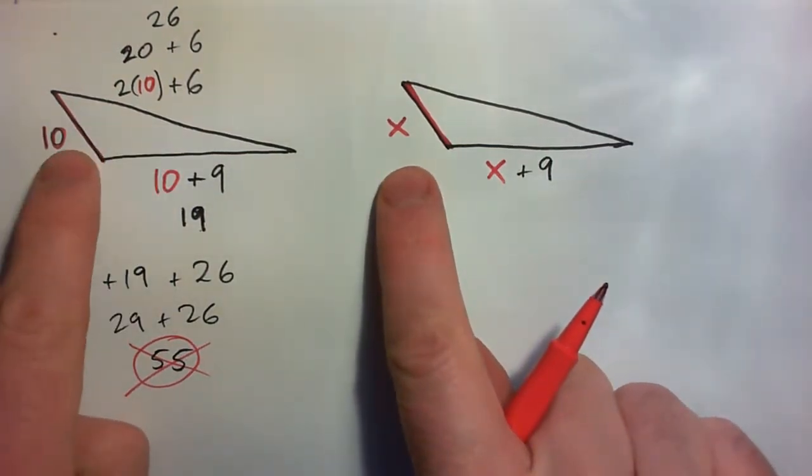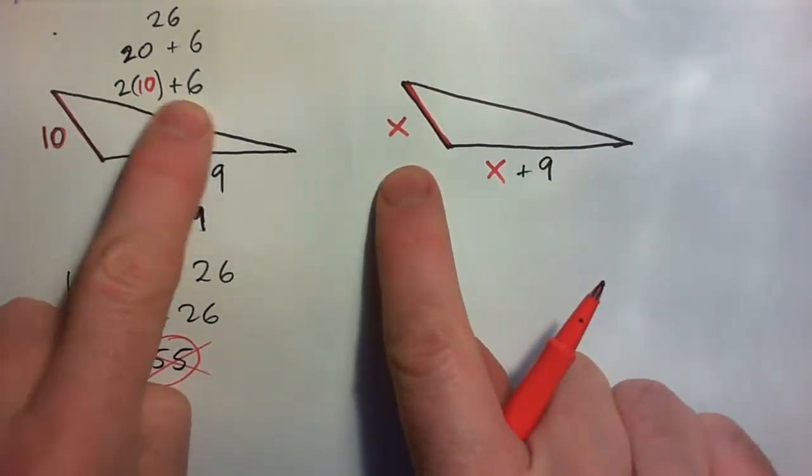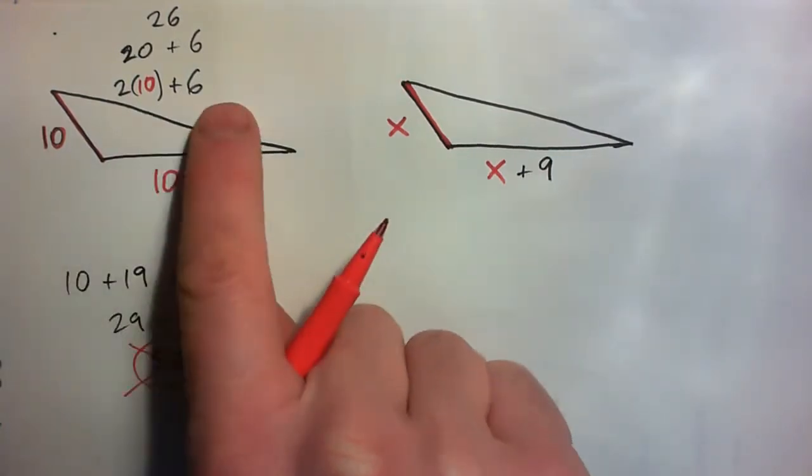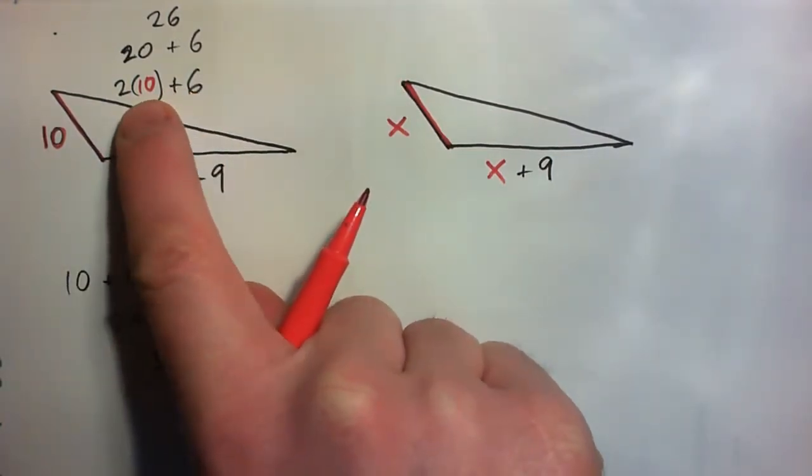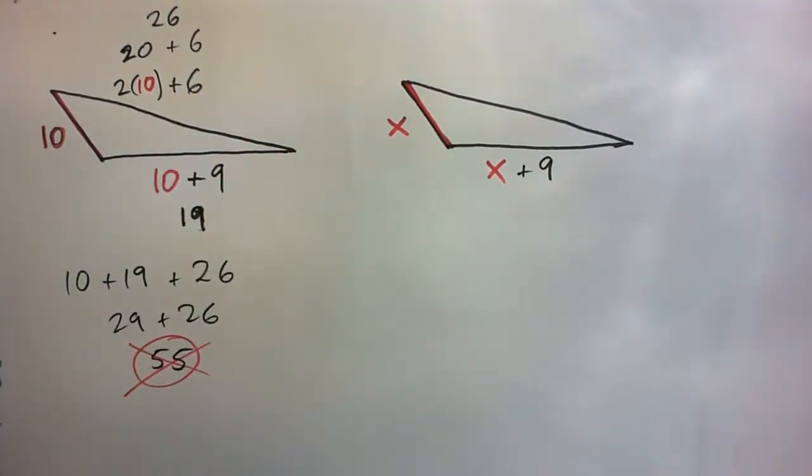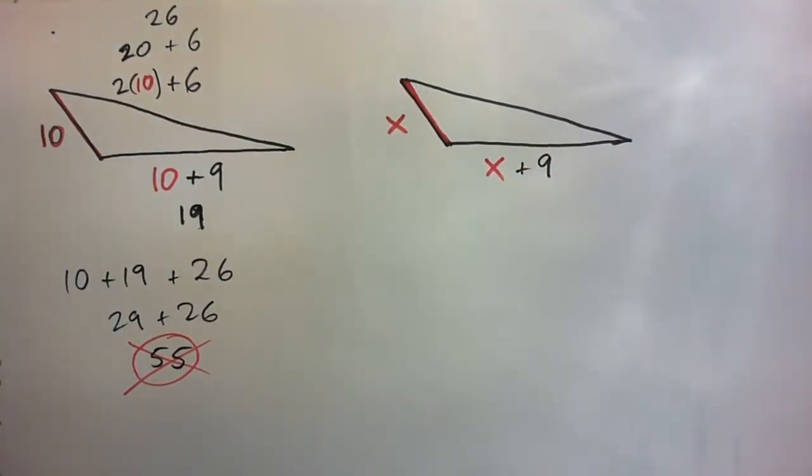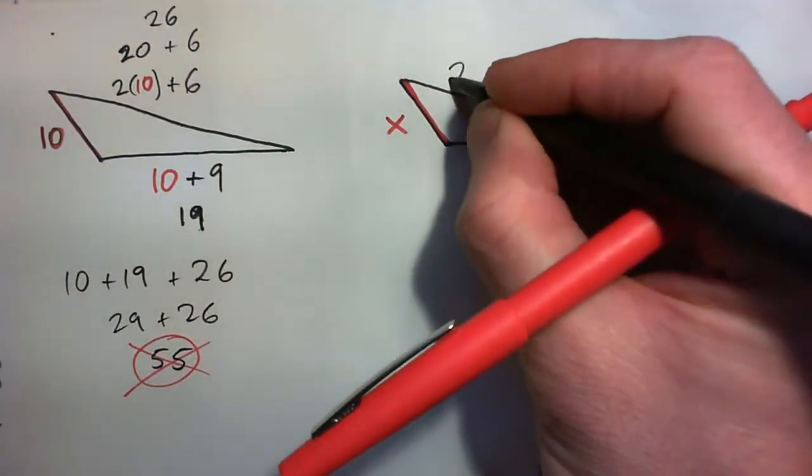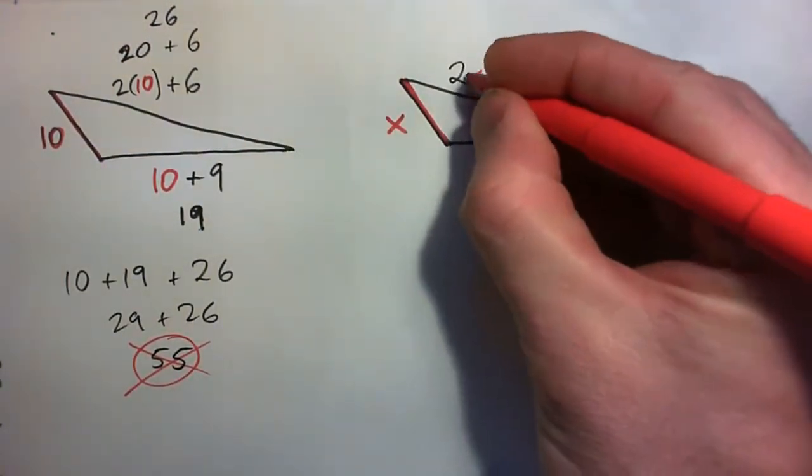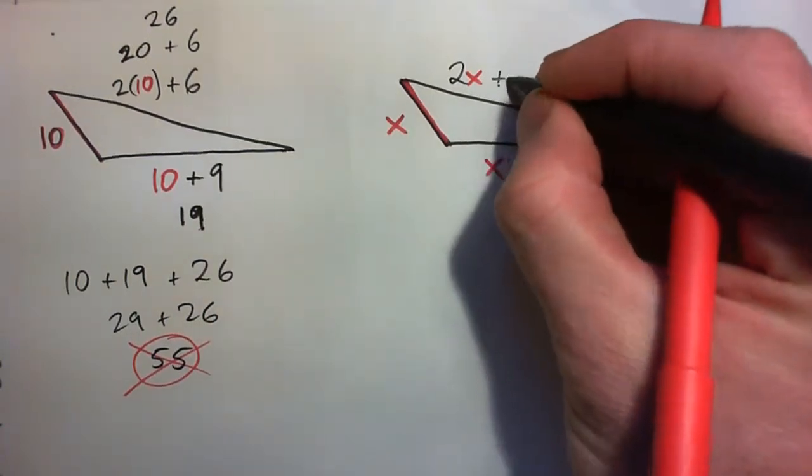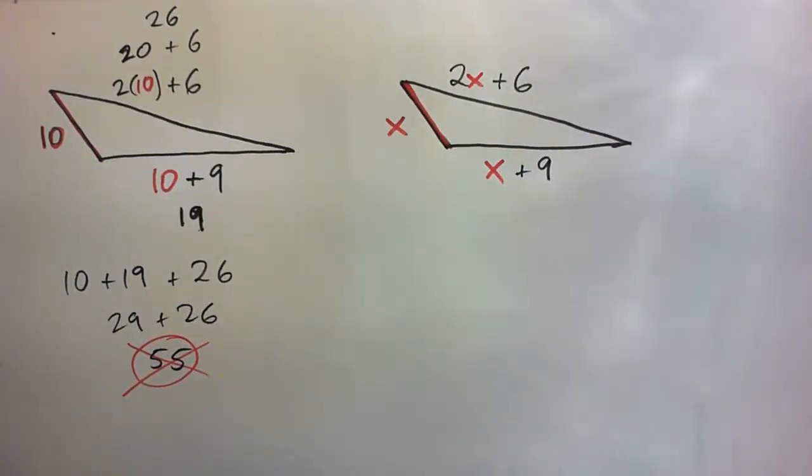So remember when this was 10, this side was 2 times 10 plus 6, twice the shortest side plus 6, 6 more than twice the shortest side. So what's this side length going to be? Can you do it? Press pause and see if you can figure it out. How about twice X plus 6. Okay, so now what's the perimeter?